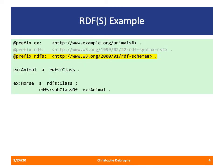Let's dive into the deep end of the pool with a simple example. Here we have an RDF turtle document in which I have declared three namespaces: one for my example, the RDF namespace, and the RDFS namespace. In this document I have three statements. The first states that this thing, animal, is a class, representing all the things that are animals.